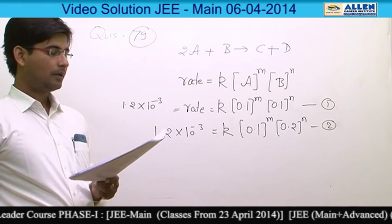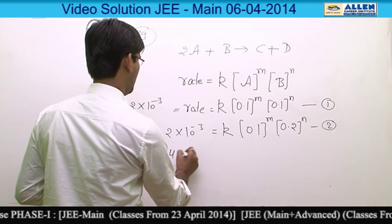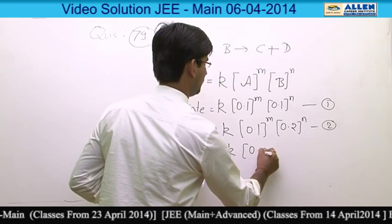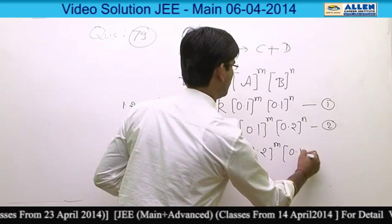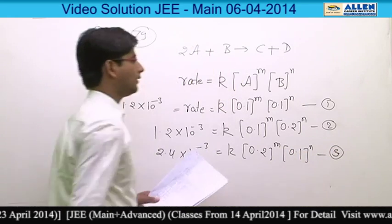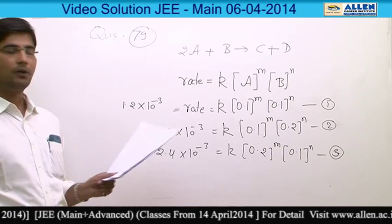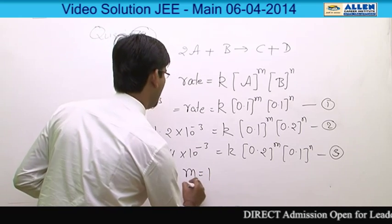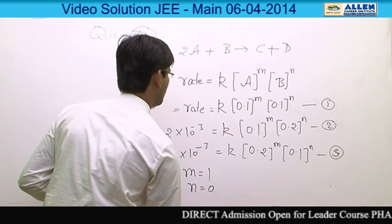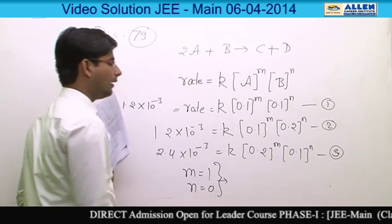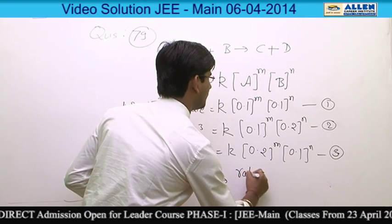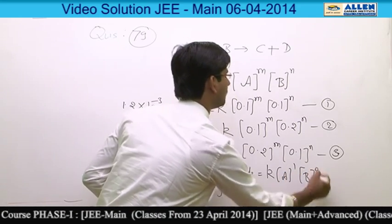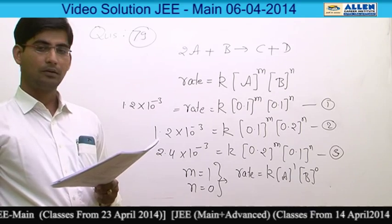In the third data, rate of reaction is 2.4 into 10 to the power minus 3, equal to K into concentration of A to the power M, into concentration of B to the power N. If we solve these three equations to find out the values of M and N, we get M equals 1 and N equals 0. So on the basis of these values, the rate of reaction equals K into A to the power 1, B to the power 0. So the correct answer is 2.